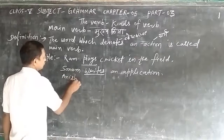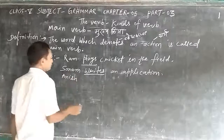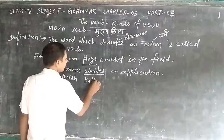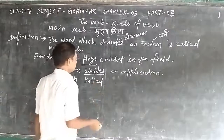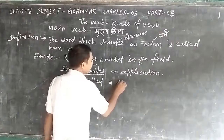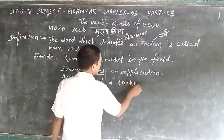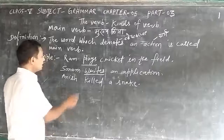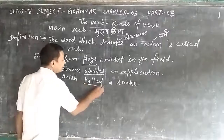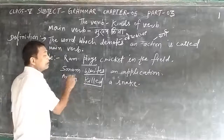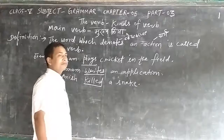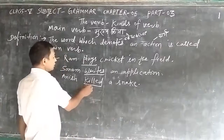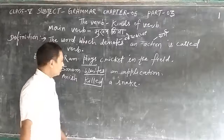Third example: 'Anish killed a snake.' In this sentence, the word 'kill' denotes an action. So, 'kill' is a main verb.